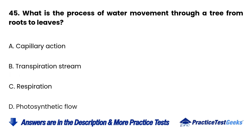Question 45: What is the process of water movement through a tree from roots to leaves? a. Capillary action. b. Transpiration stream. c. Respiration. d. Photosynthetic flow.